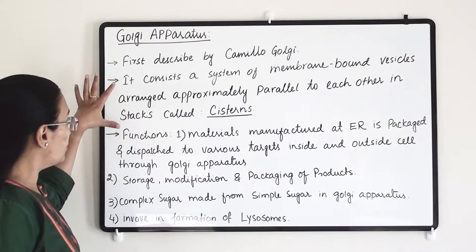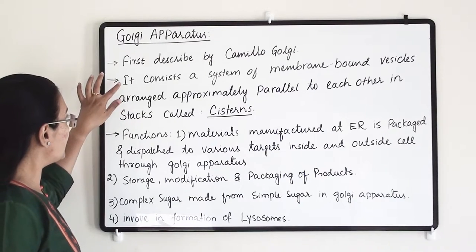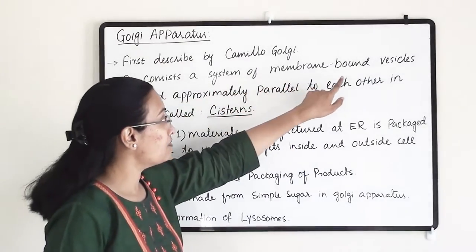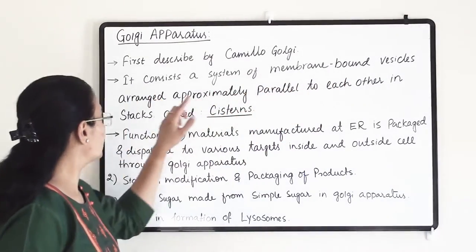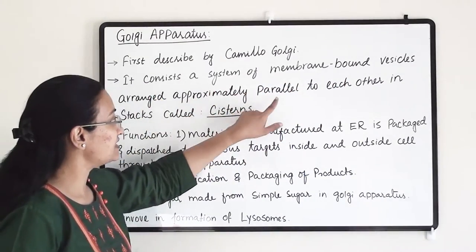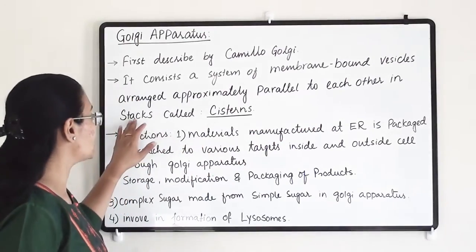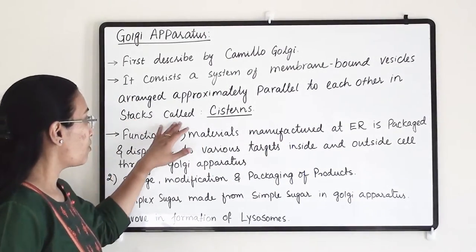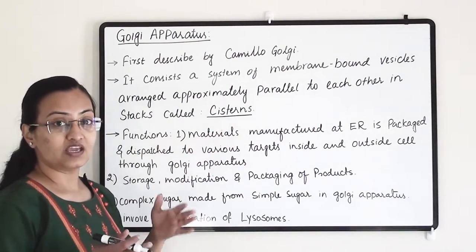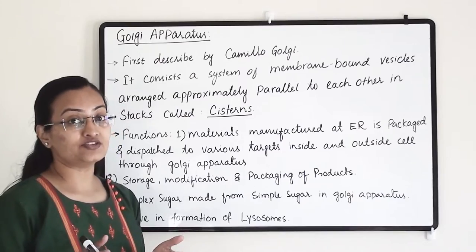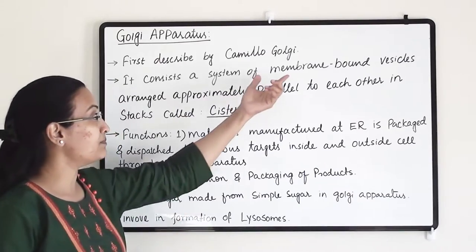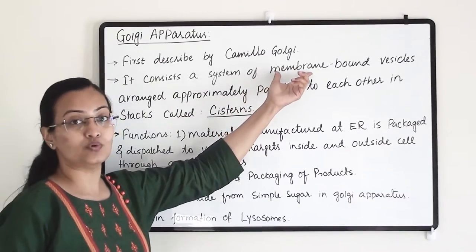The Golgi apparatus consists of a system of membrane-bound vesicles arranged approximately parallel to each other in stacks called cisterns. So they are parallelly attached to each other and they are membrane-bound vesicles.